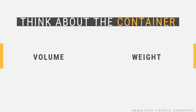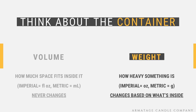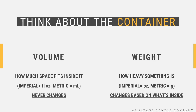No matter what kind of container it is, there are two defining physical properties that can help us figure out how much wax we need to melt down for them. Those two properties are volume and weight. Volume is how much space fits inside the container — this property never changes unless the physical size of the object somehow changes. In imperial units, this can be measured in fluid ounces, which isn't to be mistaken for normal ounces, which is actually a measurement of weight. The metric system uses milliliters to measure the volume of an object. Weight is how heavy an object is — in this case, how heavy the contents of the candle container are. This value can change based on what's inside. The imperial system measures weight with ounces, and the metric system uses grams. Volume and weight are the two main ways to figure out how much wax needs to be in a container.